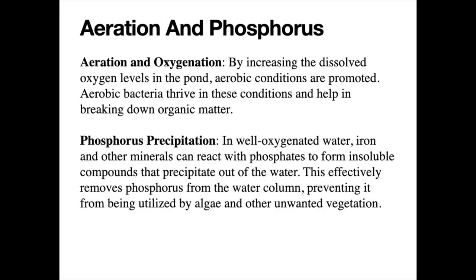In well-oxygenated water, iron and other minerals can also react with phosphorus, forming an insoluble compound that encapsulates the phosphorus and precipitates it out of the water. This effectively removes phosphorus from the water column and prevents algae from utilizing it as fuel.